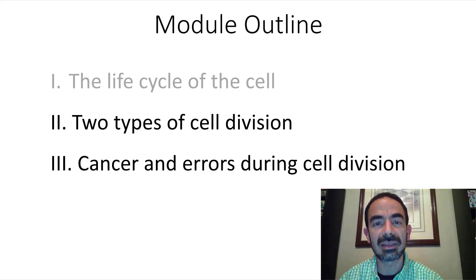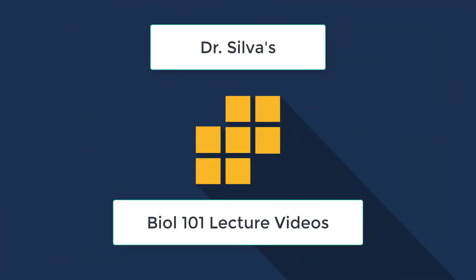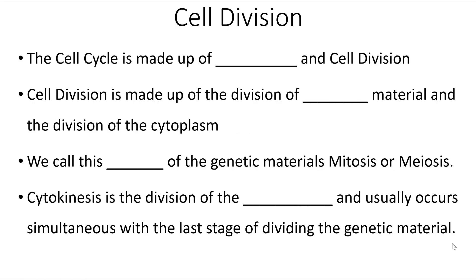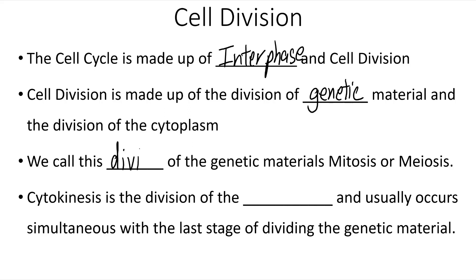We'll be talking about the reasons and the types of cell division in this video. The cell cycle is made up of interphase and cell division. Cell division is made up of the division of the genetic material and the division of the cytoplasm. We call the division of the genetic material mitosis or meiosis, and cytokinesis is the division of the cytoplasm — the liquid filling of the cell — and usually this occurs simultaneously with the last stage of dividing the genetic material.